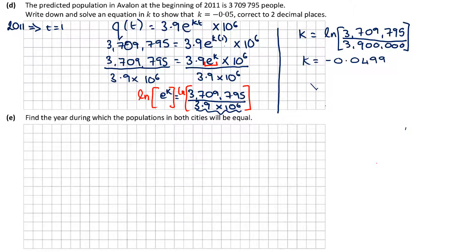The calculator gives K ≈ −0.0499. Rounding to two decimal places: the digit after is 9, so we round up, giving K = −0.05, which matches the required answer. This part was more complex due to the natural log and the numbers involved, but the answer was provided. Even if Part D wasn't completed correctly, the given value K = −0.05 can still be used in Part E and subsequent parts.